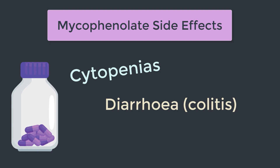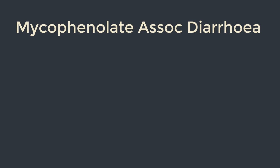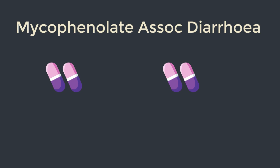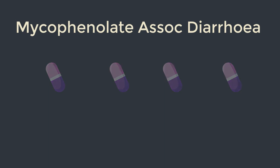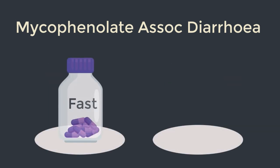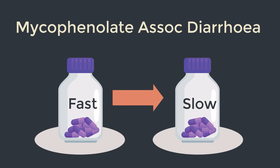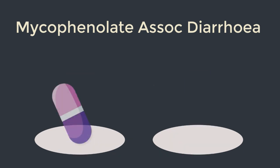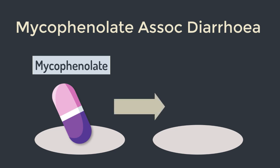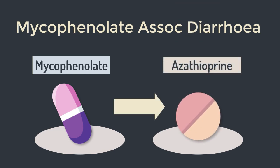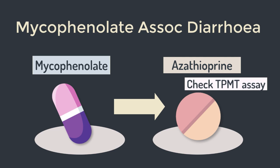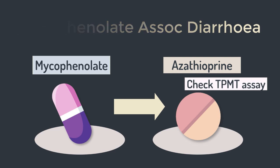If no infective cause is found, we may attribute the diarrhea to mycophenolate. To reduce it, we have a couple of options: we can spread out the total mycophenolate dose — for example, instead of one gram twice a day, dose 500 milligrams four times a day. Or we might change the preparation from fast release to slow release. As a last resort, we sometimes switch mycophenolate to azathioprine, but we need to check TPMT levels before doing so.